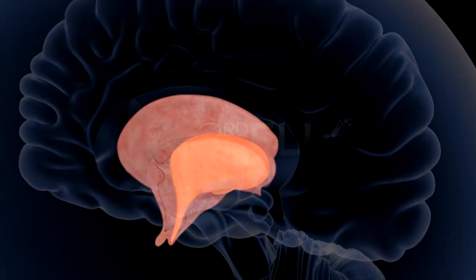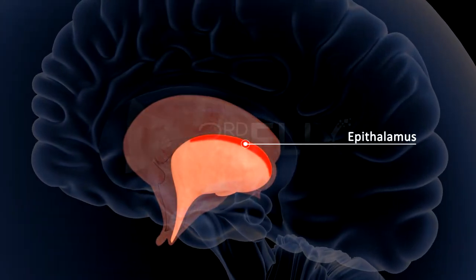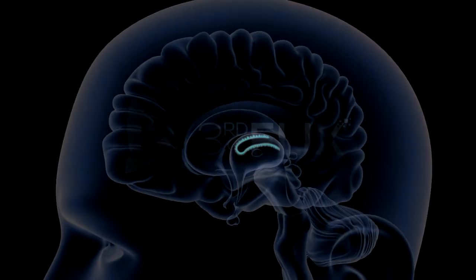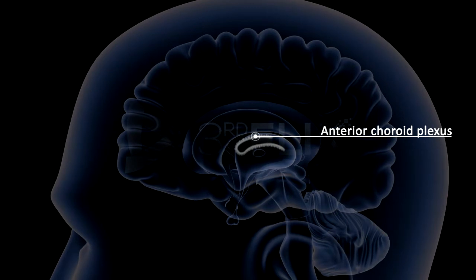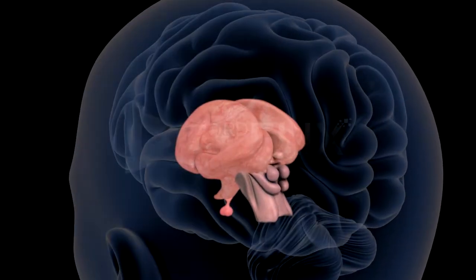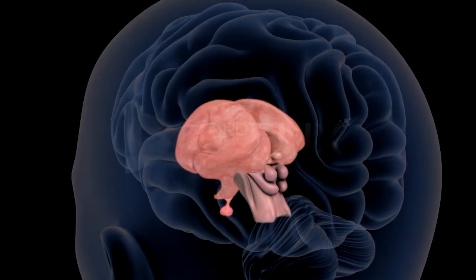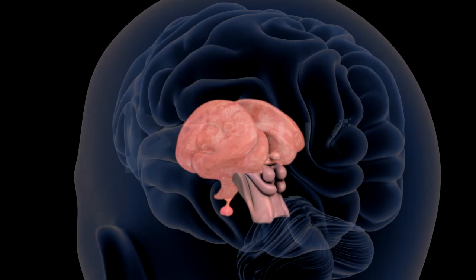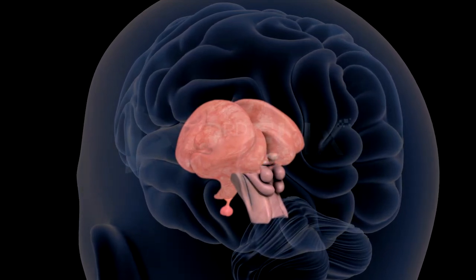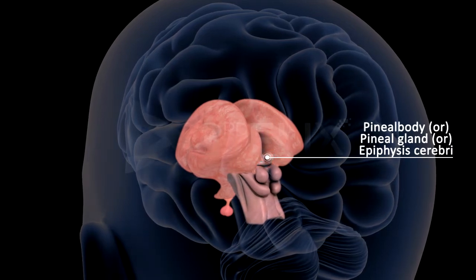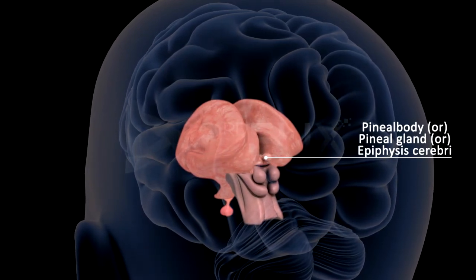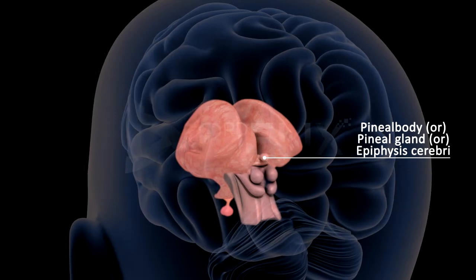The roof of the diencephalon is called the epithalamus. It is fused with the pia mater to form the anterior choroid plexus. Just behind the anterior choroid plexus, the epithalamus forms the pineal stalk, which ends in a rounded structure called the pineal body, pineal gland, or epiphysis cerebri.